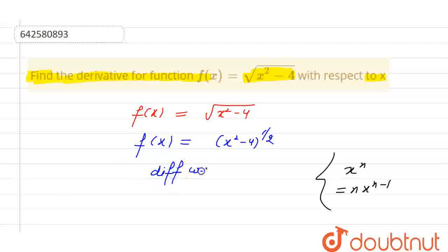So, differentiation with respect to x. We will write f dash x equals power will shift to coefficient, x square minus 4, and power decreases by 1.